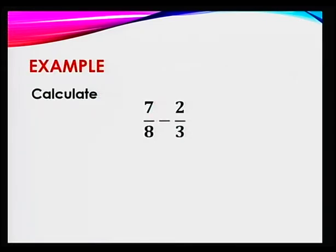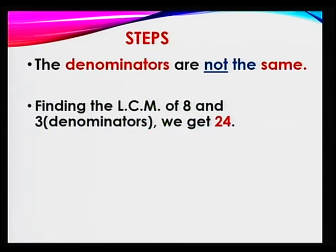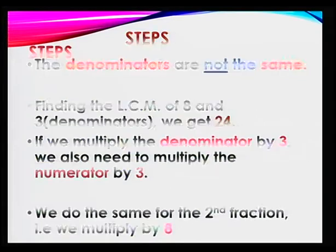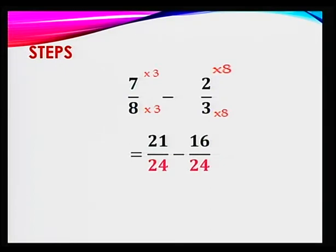Let's take another one: 7 over 8 minus 2 thirds. First thing, always check the denominators. Are they the same? No, they are not. Make them the same. The LCM of 8 and 3 is 24. If you multiply a denominator by 3, you need to multiply the numerator by 3, and the same goes for the 8. So you have 7 over 8 minus 2 thirds, giving a common denominator of 24. Multiply 7 by 3 to get 21, and multiply 2 by 8 to get 16. So 21 over 24 minus 16 over 24, which is simply 5 over 24. That's the answer.